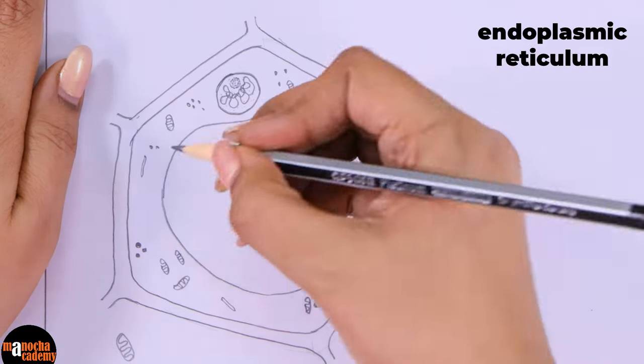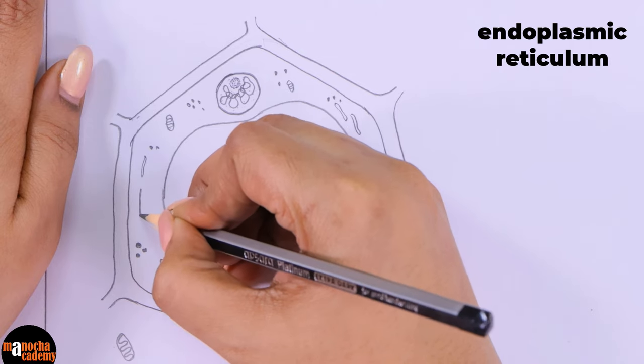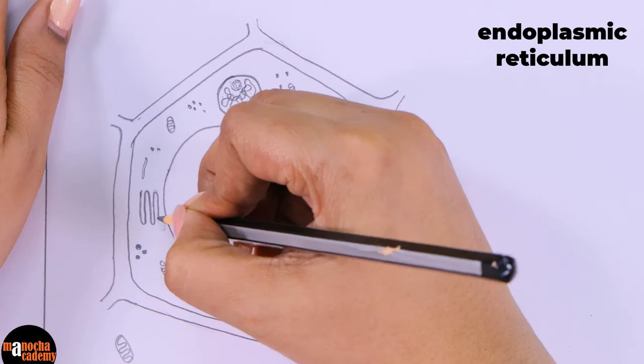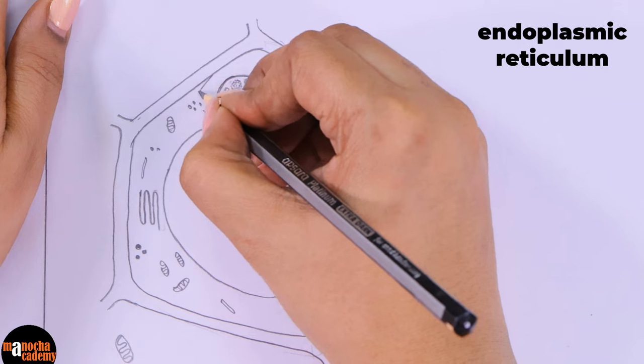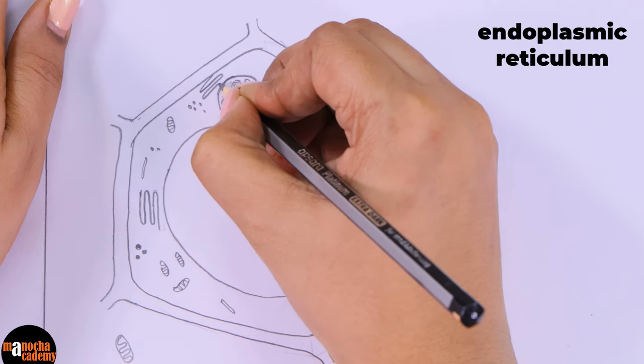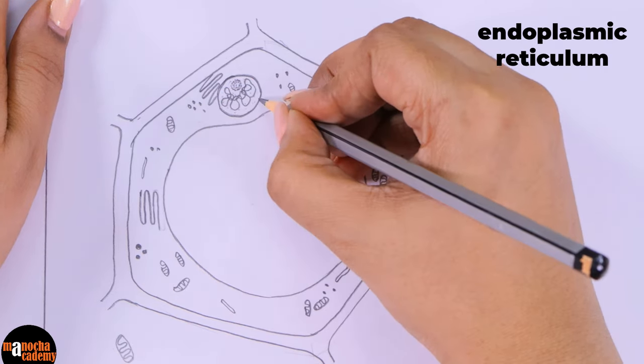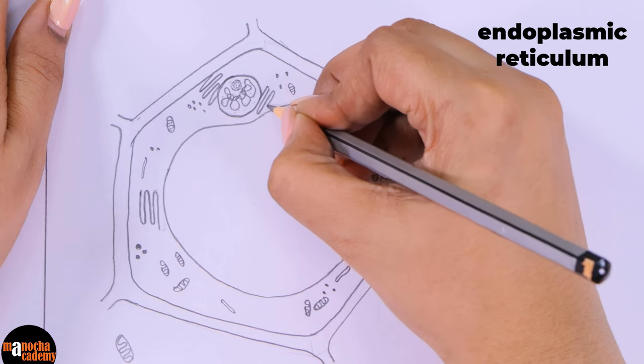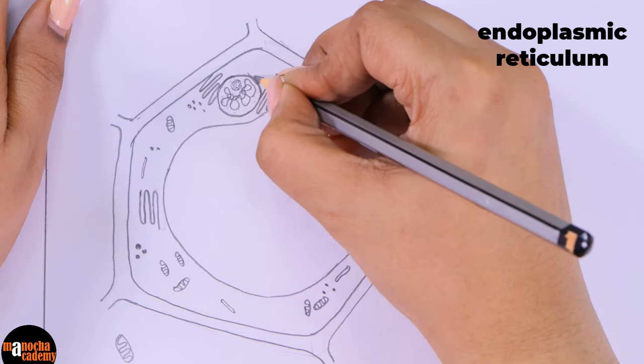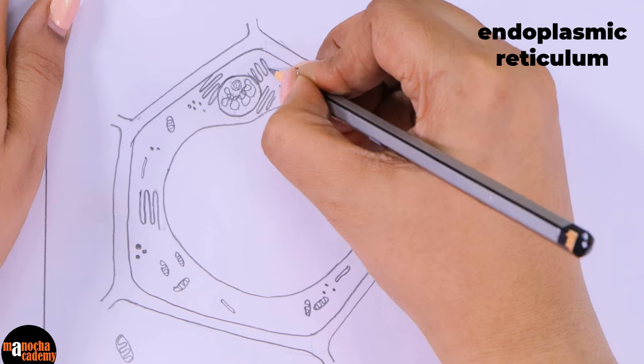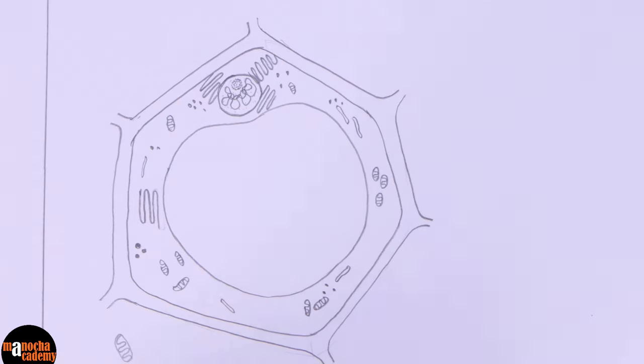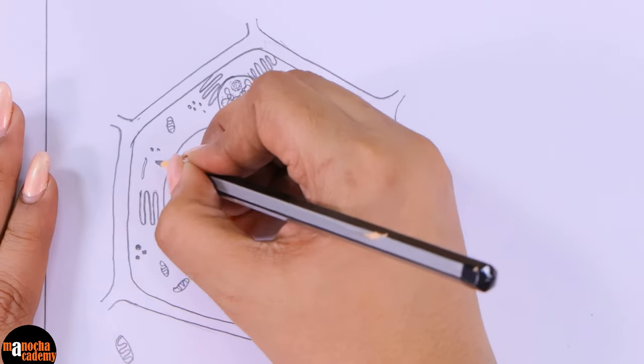We are now going to draw the endoplasmic reticulum. For drawing the endoplasmic reticulum, it is better to draw the endoplasmic reticulum towards the nucleus, so it is almost like connecting the nucleus to the cytoplasm and connecting the nucleus to the cell membrane.